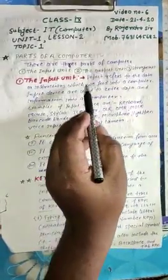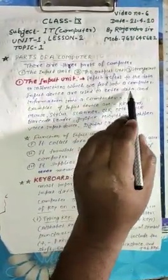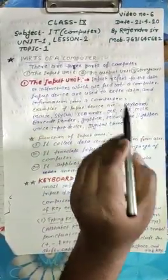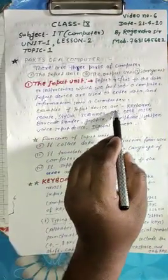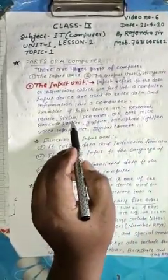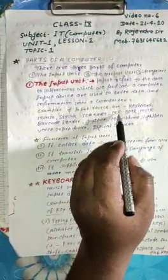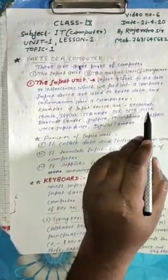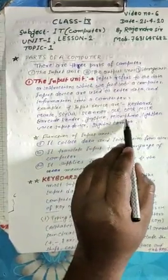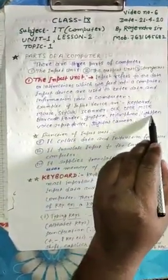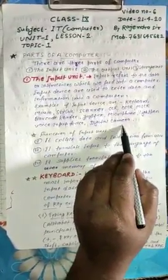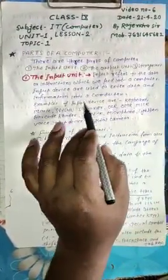Input devices are used to enter data and information into a computer. Examples of input devices are keyboard, mouse, stylus, scanner, OCR, OMR, MICR, barcode reader, joystick, microphone, light pen, voice input device, and digital camera. These are our input devices.